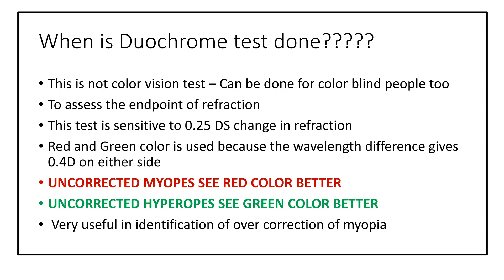The Duochrome test is not a color vision test and can be done even for color blind people. The main aim of the Duochrome test is to assess the endpoint of refraction. This test is very sensitive, even to a 0.25 diopter change in refraction, giving a major clue as to whether the prescribed refraction is adequate.